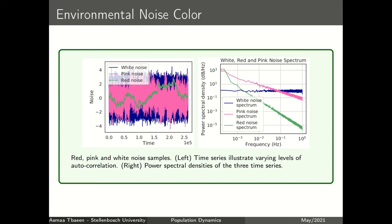The power spectral density describes the distribution of power into frequency components. We classify a time series as white when there is no dominant frequency — a uniform power spectral density — and the pink and red time series are dominated by the lower frequencies. To generate environmental noise we use one of these noise time series. As a quick recap, we first talked about population models and how they are used to track population dynamics, then we defined deterministic and stochastic models, and lastly we talked about what type of noise we consider when modeling any population.